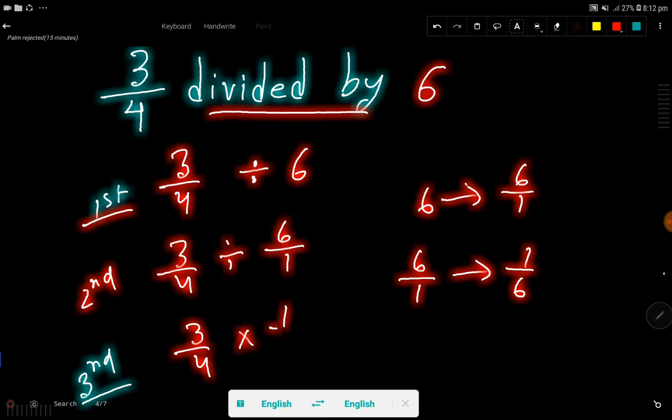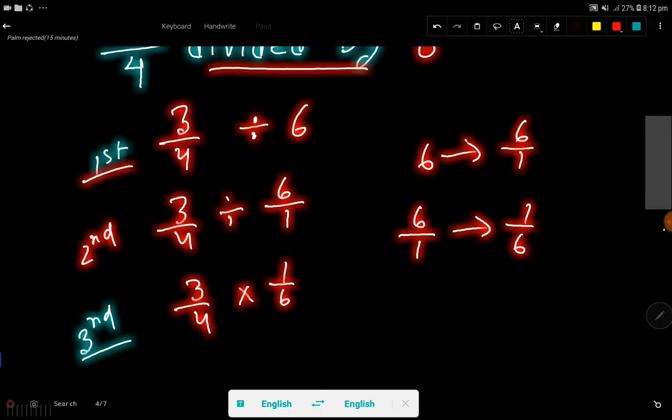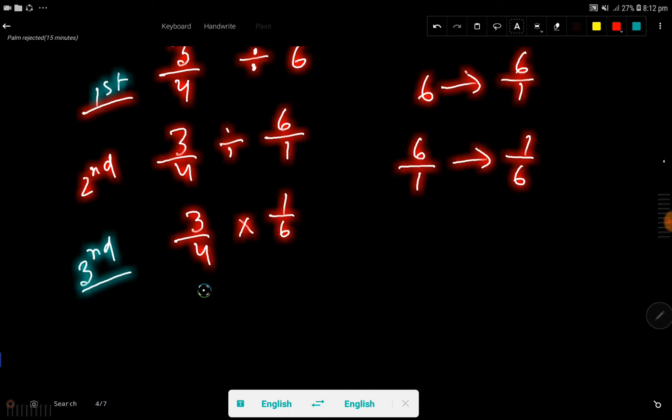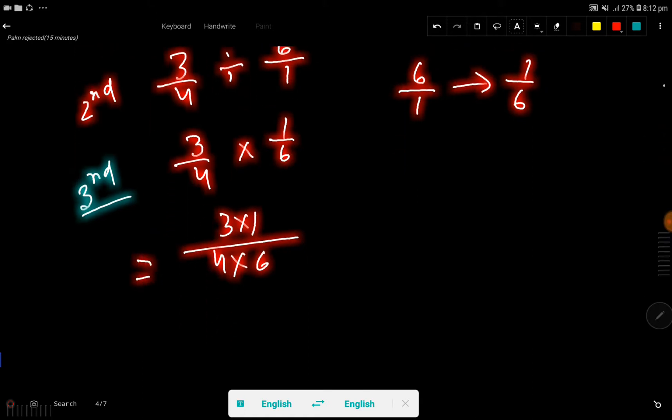Okay, so we are getting here this. Now we have to form another fraction, so we have to multiply numerator to numerator, then denominator to denominator. So look, we are getting here this: 3 over 4 times 1 over 6.